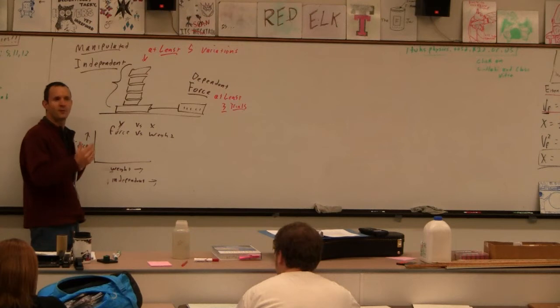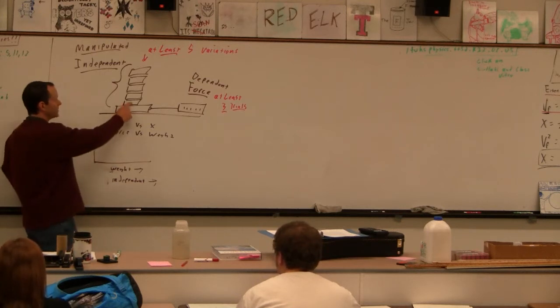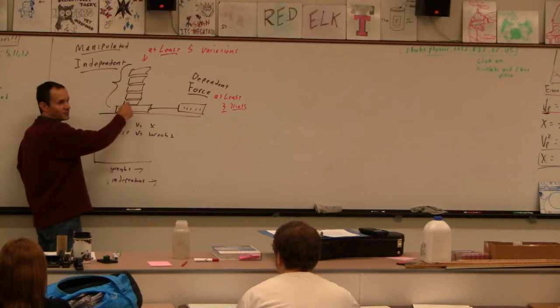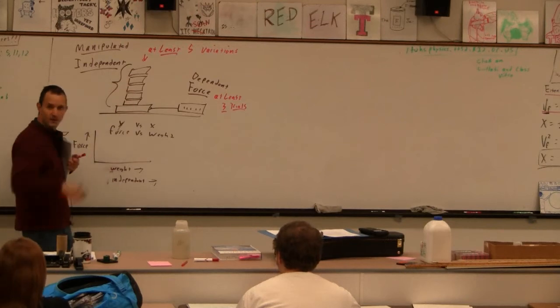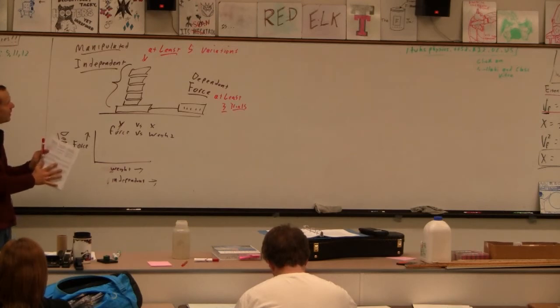You would want to pick angles. You wouldn't want to pick 30 degrees, 30.5 degrees, 31 degrees, 31.5. You'd want to use, like, a wide range of angles. Or, like, these masses, you wouldn't want to try the block with one paper clip, the block with two paper clips on it. You'd want to do, like, the block twice the block's mass, three times the block's mass, etc. So read through there. There's notions about all of that stuff in here. That's that.